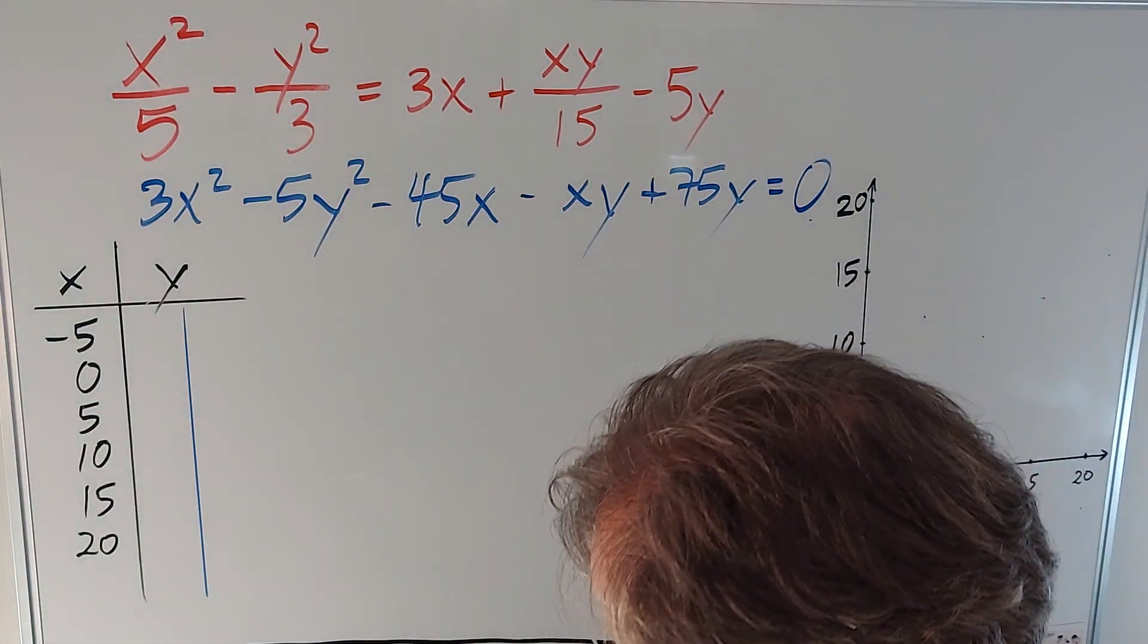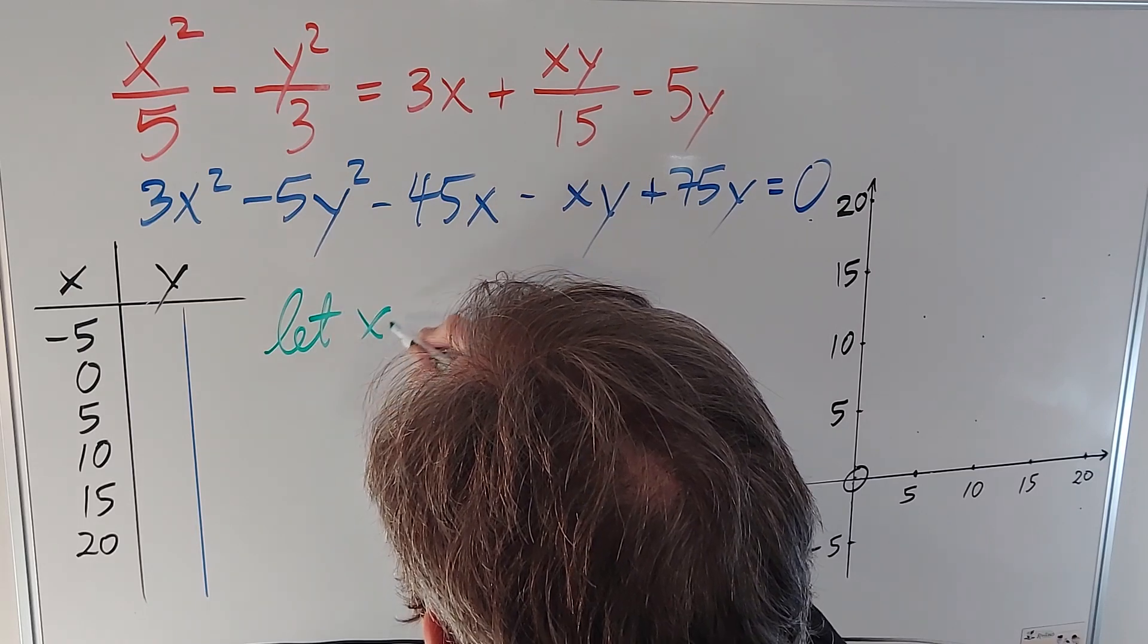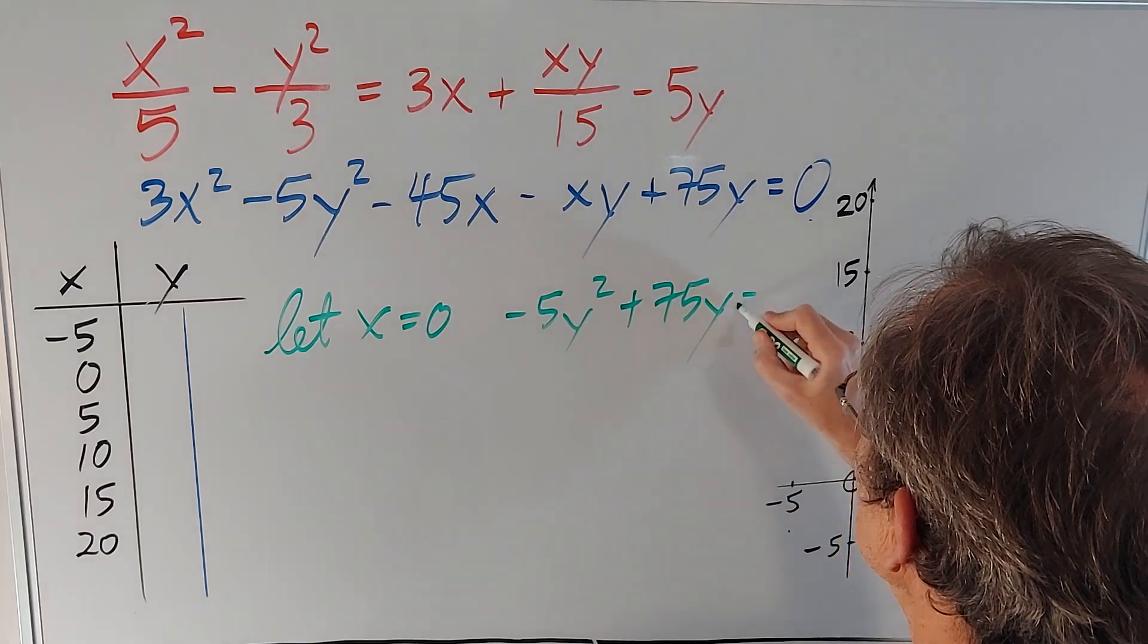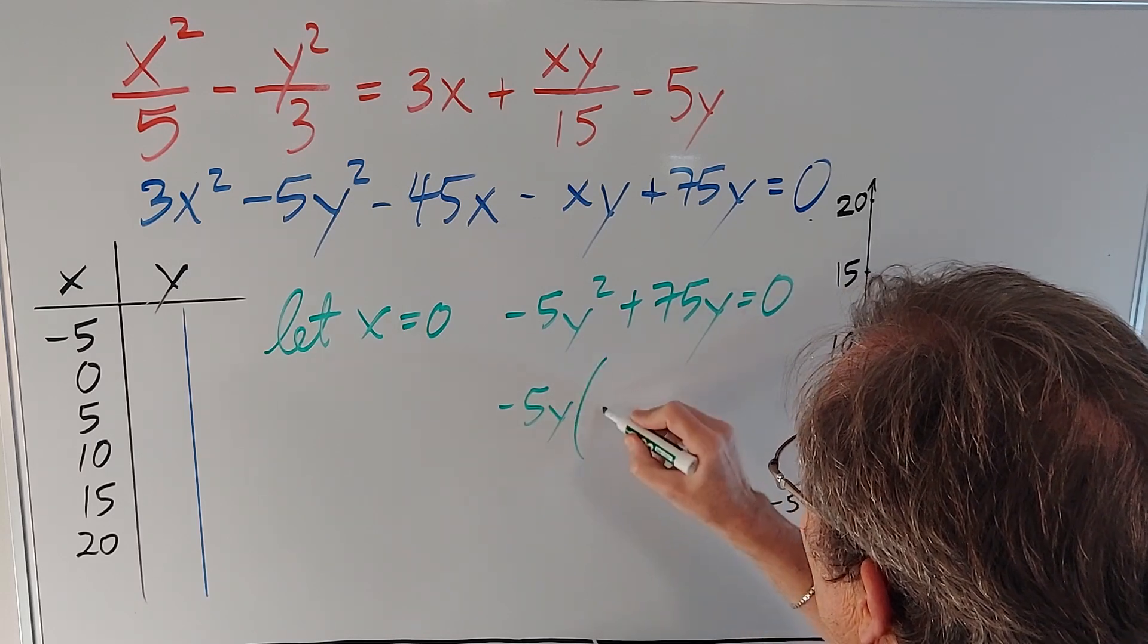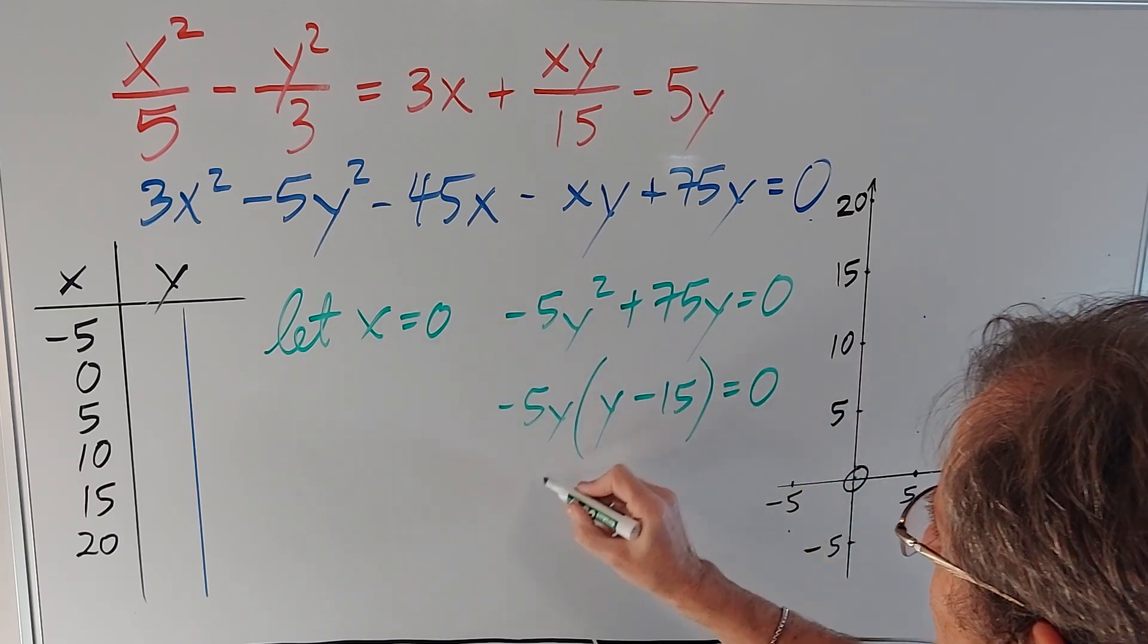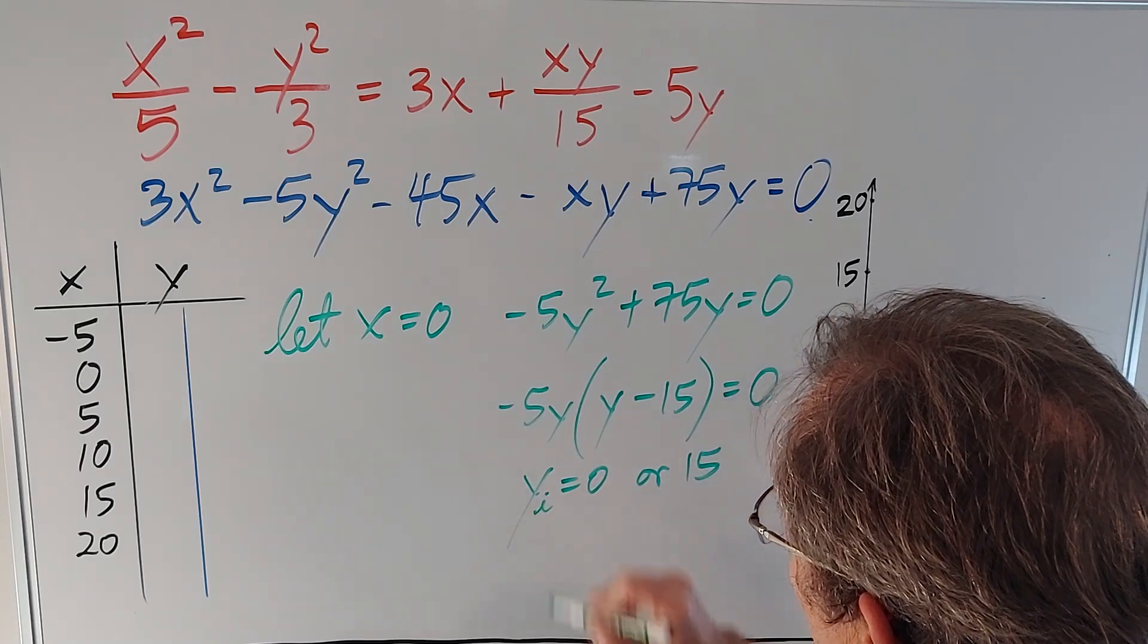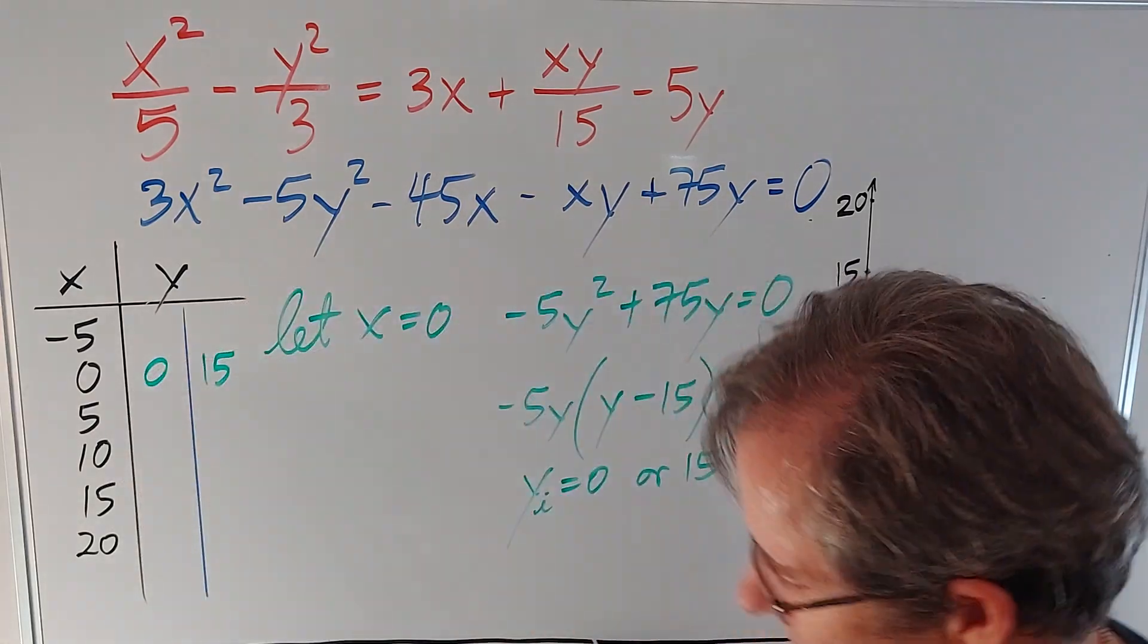Let's find some points. If I let x equal zero, I can find the y-intercepts. If I let x equal zero, I'm going to get -5y² + 75y equals big fat zero. If I factor out -5y, I'm left with y - 15. So we can see y could be zero or 15. Now that's not any old y's. Those are the y-intercepts.